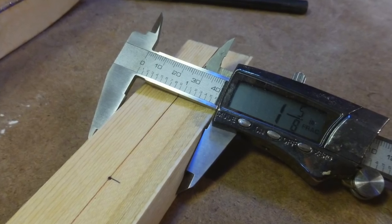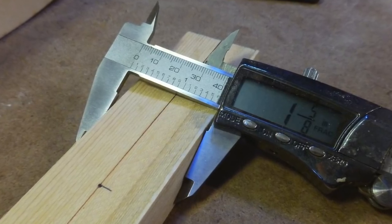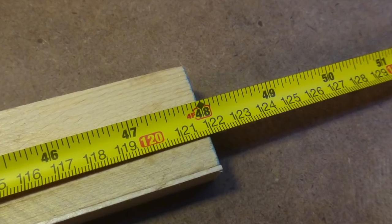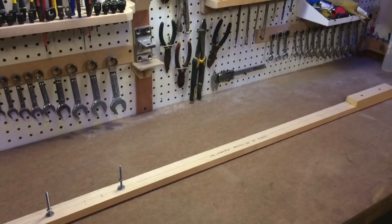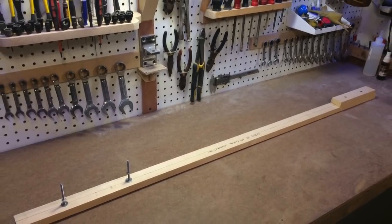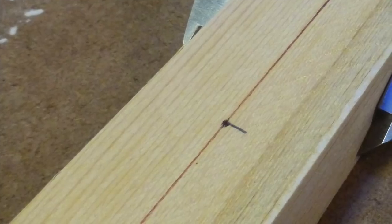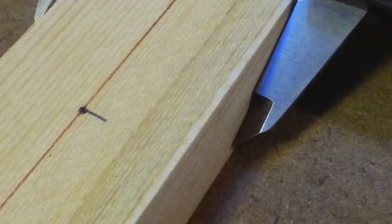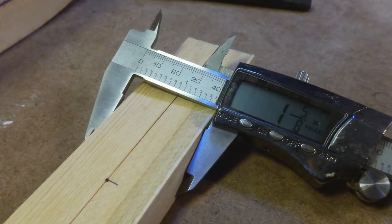You need a strip of straight wood, one and five-eighths inch wide, and about 48 inches long. We used a piece of one by two pine from the local hardware store, and added a strip of one sixteenth inch balsa to one edge to achieve the perfect width.